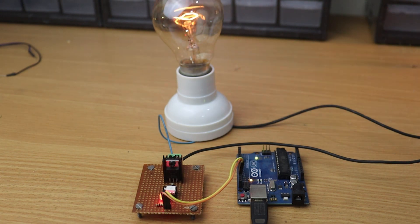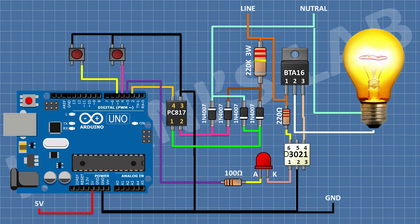In this example, we have made a digital lamp dimmer with Arduino. Let's see how it works.